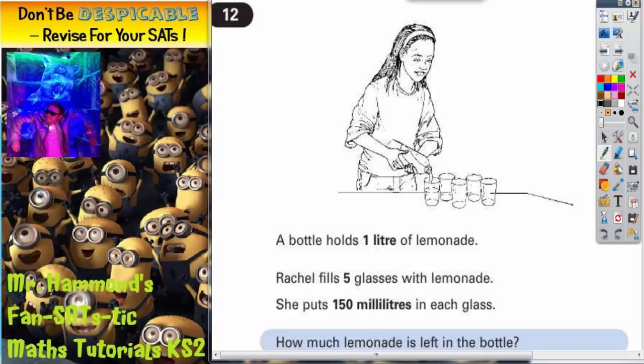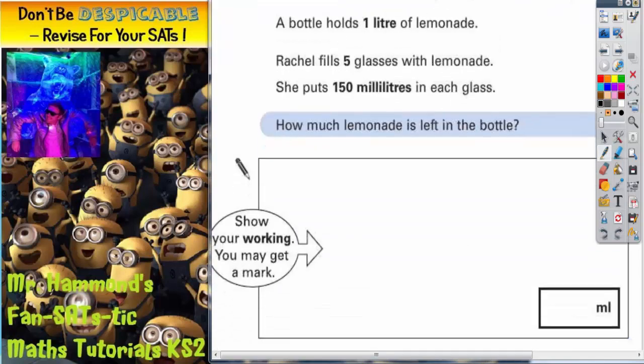We don't need to look at the picture so we can scroll down. We've still got the information there and now we've got a whole space for doing some working out. The first thing to notice is that the bottle talks about being one liter but the glasses contain 150 milliliters, so they are different units.